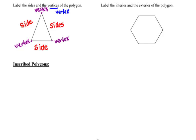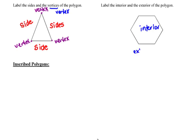In this unit, we'll be talking about interior and exterior with respect to a polygon. Just like interior paint is used to paint the inside of your house, the interior of a polygon is located within the polygon. And just like exterior paint would be used to paint the outside of the house, when we're talking about the exterior of a polygon, we're referring to the space that's outside of the polygon.